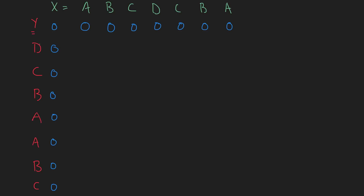We're going to start here at D and compare D with each element in X up here to find any matches. When we compare D and A they are not the same character, so we take the larger of either the upper or the left value. Since they are the same, we take the upper one — zero — and draw an arrow pointing to where we got that value, so we can trace back through the array to find our longest common subsequence.